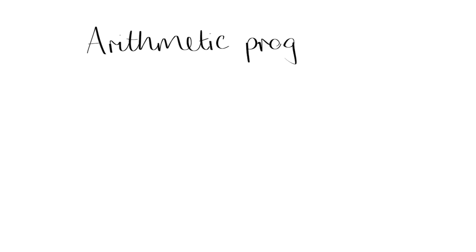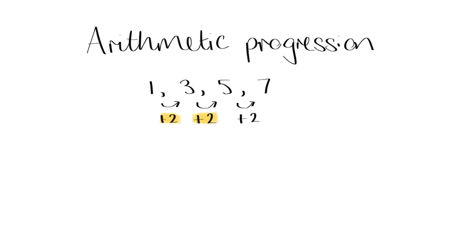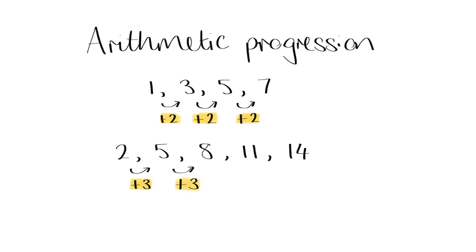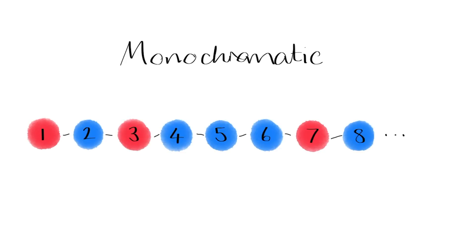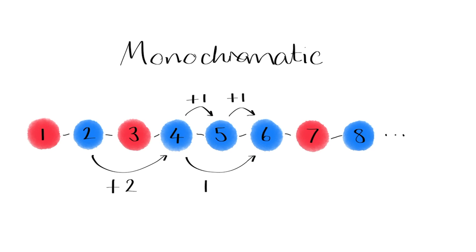To study this question, let's introduce some terminology. An arithmetic progression is the kind of sequence you might have met in school, where the differences between consecutive terms are all the same. For our purposes, we'll consider arithmetic progressions with a finite number of terms. If we have some beads on a string and we number them, then we'll say an arithmetic progression is monochromatic if the corresponding beads all have the same colour. For example, 4, 5, 6 is a blue monochromatic arithmetic progression. So is 2, 4, 6, 8. So we're interested in whether there is some large number of beads which guarantees that there will always be a monochromatic arithmetic progression of length 3.